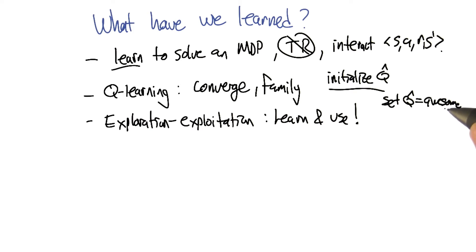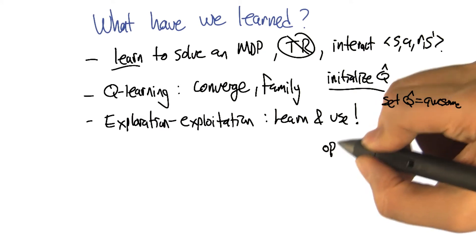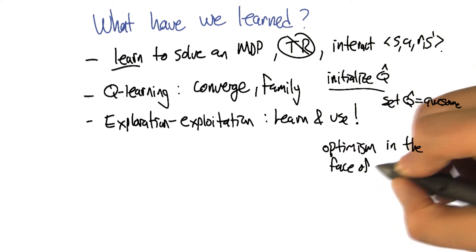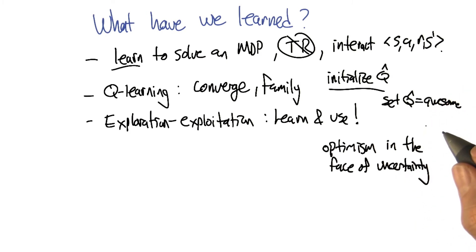So if we initialize Q hat to awesome values, then what the Q-learning algorithm will do, even with greedy exploration, is it'll try things that it hasn't tried very much and it still thinks are awesome. And little by little it gets a more realistic sense of how the environment works. So it's very optimistic. That's right. Exactly. And it's referred to often as optimism in the face of uncertainty. And it's a similar kind of idea that's used in algorithms like A star.